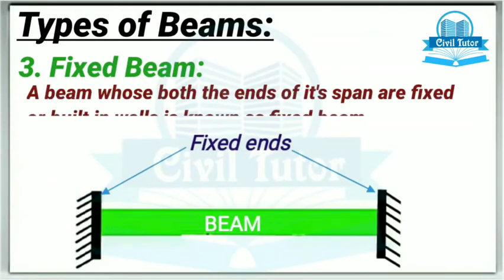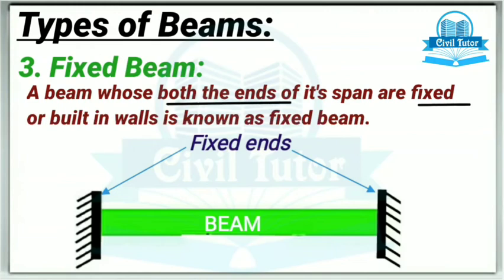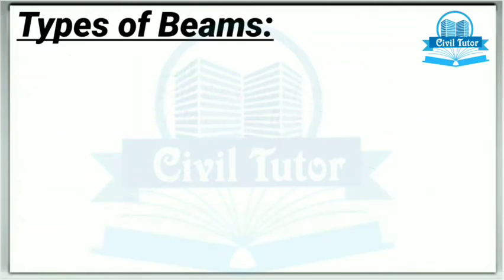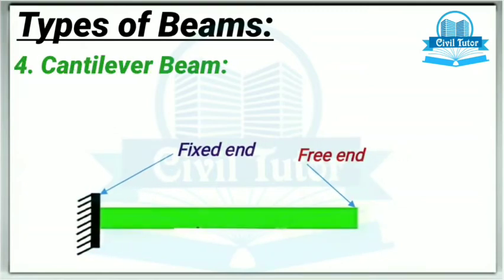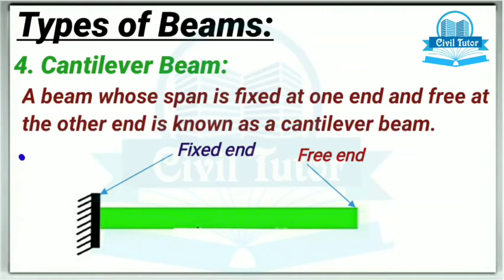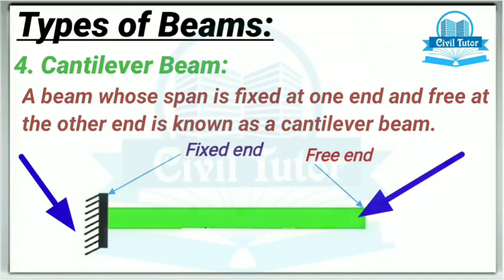The third one is fixed beam. A beam whose both ends of its span are fixed or built-in walls is known as fixed beam. The fourth one is cantilever beam. A beam whose span is fixed at one end and free at the other end is known as cantilever beam.